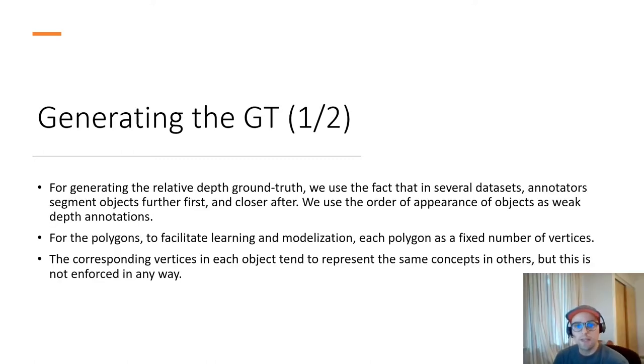So for training our relative depth branch, we need some ground truth. This ground truth is not directly available. We do not use any depth annotations, but we use the fact that in several datasets, the annotators segment objects that are further in the image first and that are closer after. So we use the order of appearance of objects in an image from further to closer as weak depth annotations, as relative depth annotations in other words.